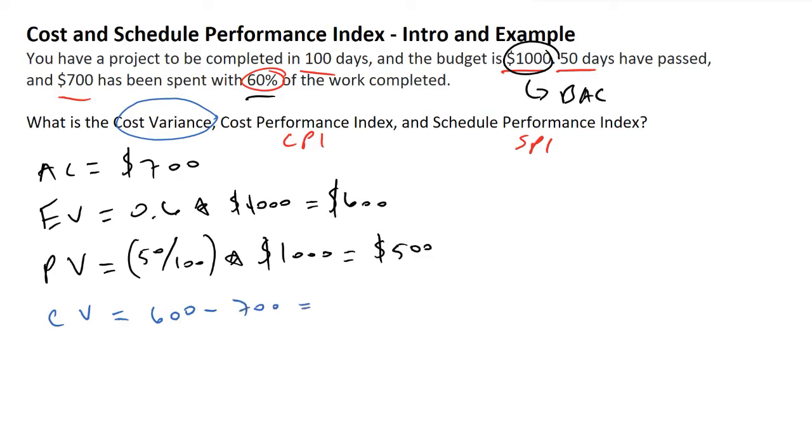Therefore, our cost variance is minus $100. This is another way of saying that we are $100 behind schedule from where we should be based on how much money we've made.